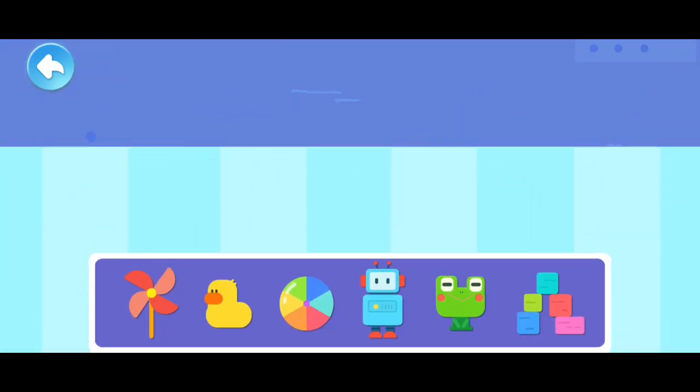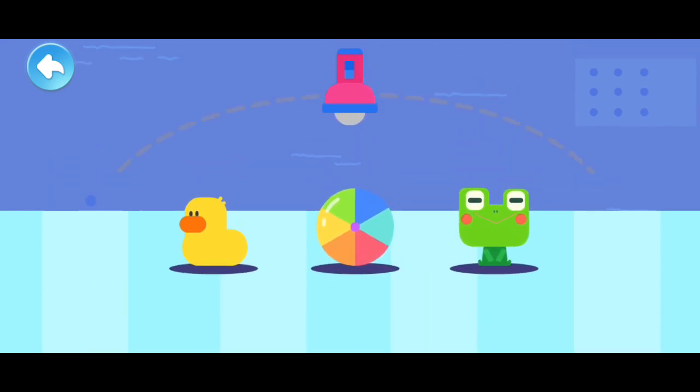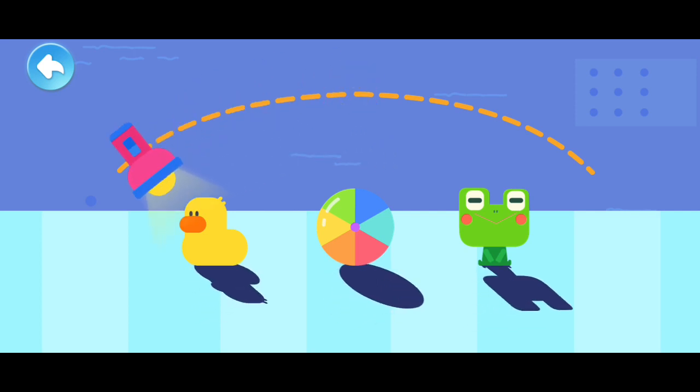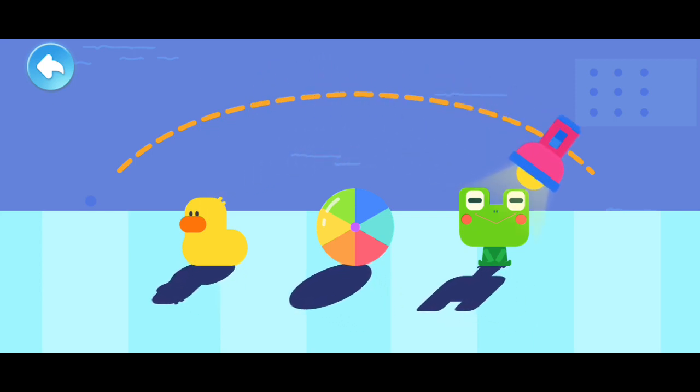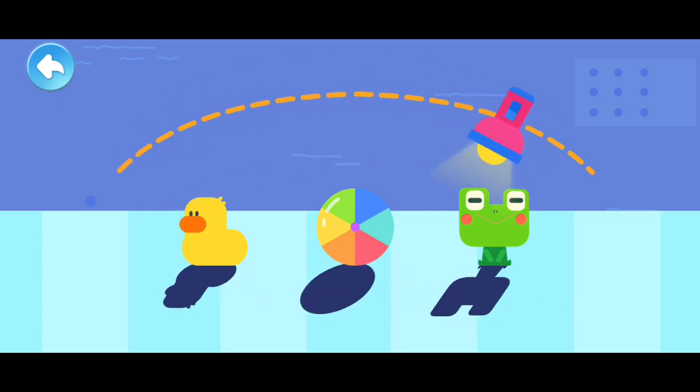Which toys do you want to see the shadow of? The shadows can be long and short for a while. As the flashlight moves, it changes the direction of the light. When the light changes, the shadow follows.